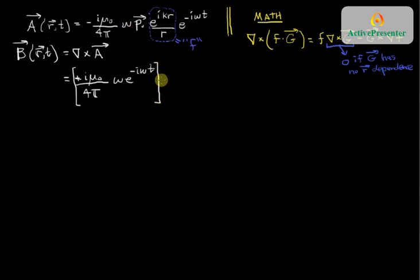And then the vector part of that, what we're going to call g, is the dipole moment p-naught. And then that just gets, we take the cross product with the grad of the f function. And the grad of the f function is e to the ikr over r.